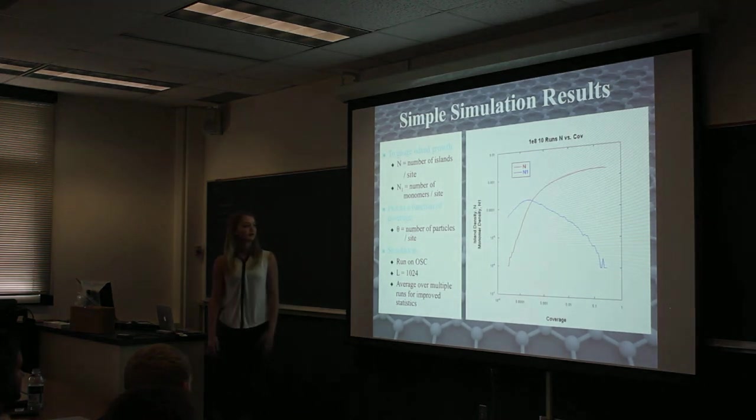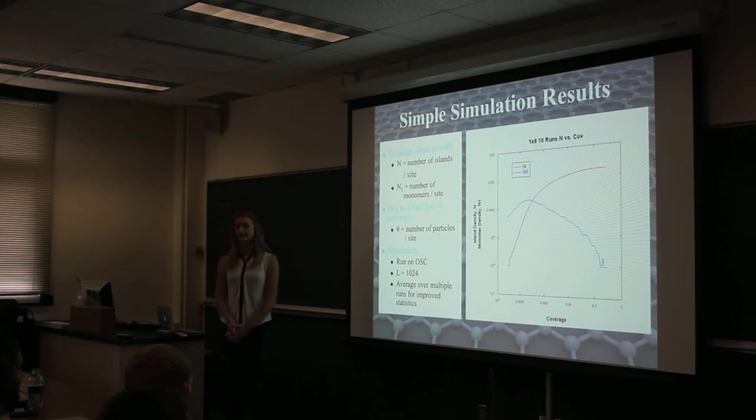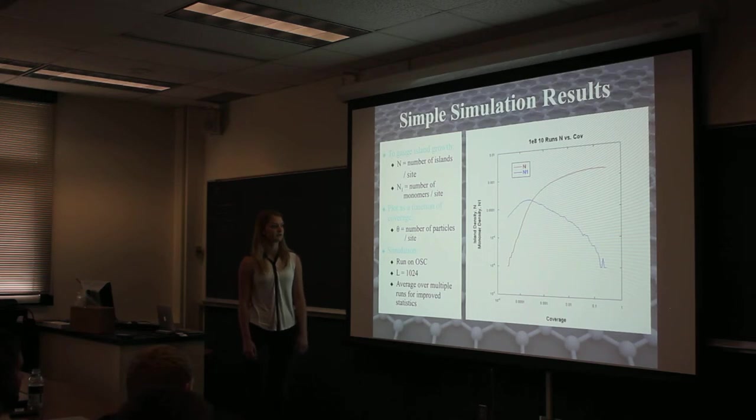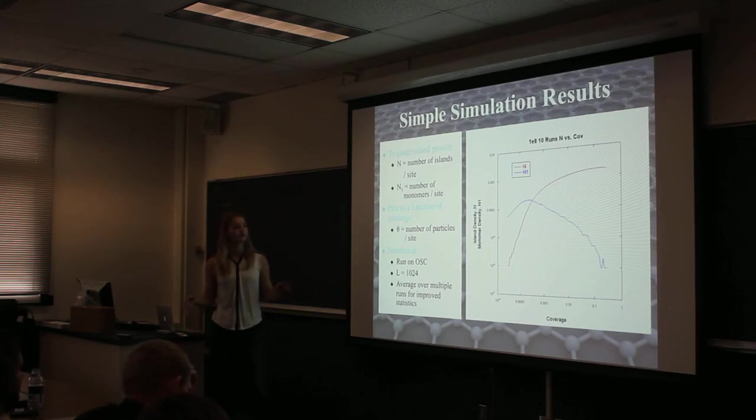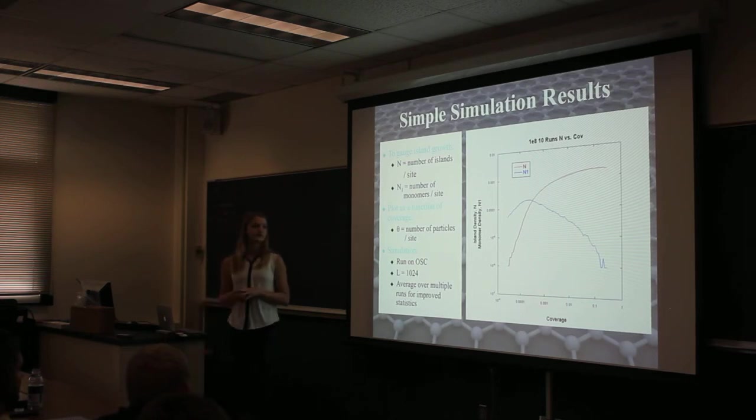Here are some more results that we look at. We look at the island density and the monomer density, which are given as per site, so divided by the number of sites. This is averaged over ten runs for better statistics. You can see in red the island density. This is a log-log plot, so initially the linear shows that there's a power relationship between the two. And then as the coverage increases, so as more of the substrate is covered, the island growth saturates, so you're not getting any new islands, you're just getting bigger islands.